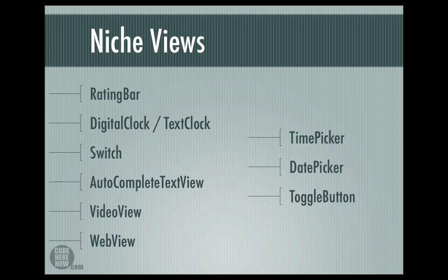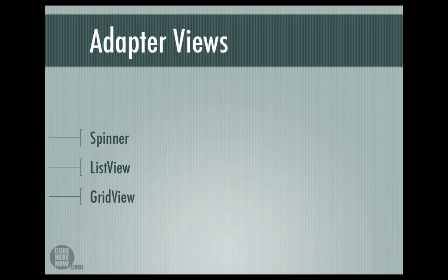There are situations where you have to display collective information and regular views don't measure up to that. So Android has a special set of views to handle such situations — they are called adapter views. Consider the situation where you have an array of countries, a list of contacts, or a list of images to display. The size of this collection could be anywhere from zero to a thousand, and it is very tedious to create 200 text views to display 200 items. To tackle such situations we use adapter views.